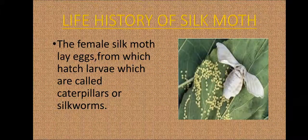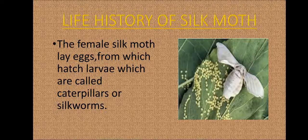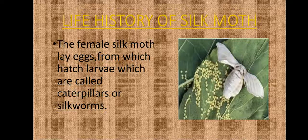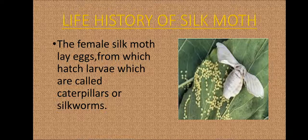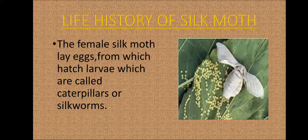Do you know whether silk fibers are plant fibers or animal fibers? Silk fibers are also animal fibers. There are silkworms which spin the silk fibers. The rearing of silkworms for obtaining silk is called sericulture. Rearing means taking care of and raising these silkworms so that we can obtain silk from them.